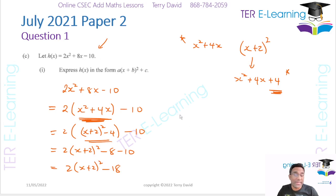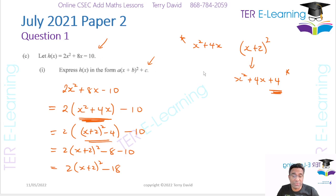There are various ways to work this out. Some people expand and equate coefficients — that's also an option. But your final answer is going to be 2(x plus 2) squared minus 18.